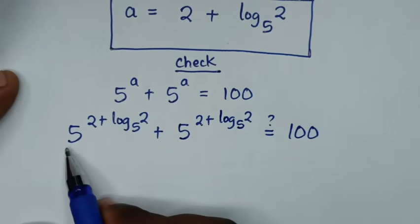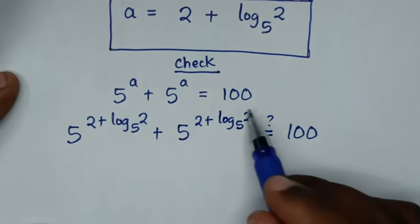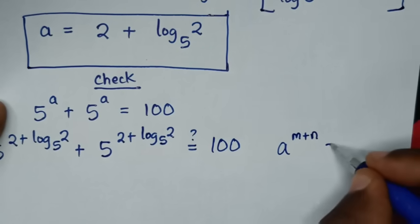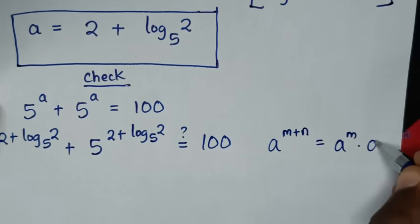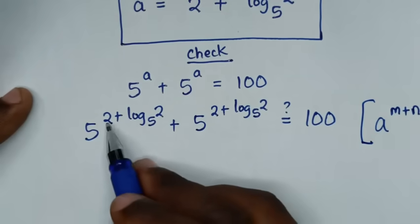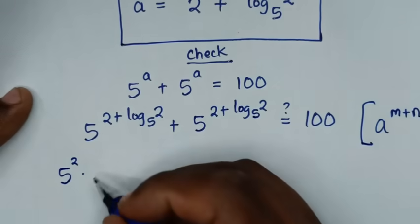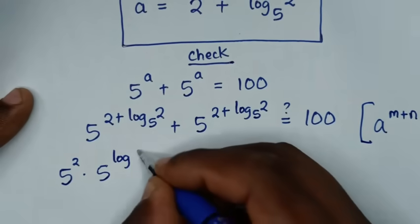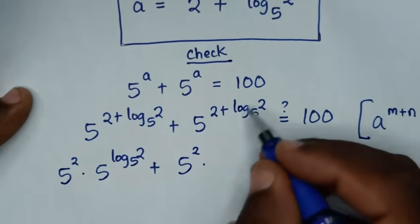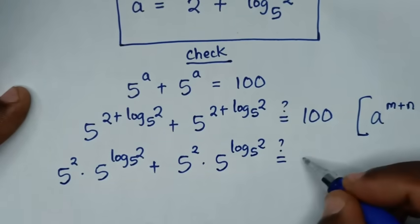Then from here, 5 power of 2 plus log base 5 of 2 — this part is in the form of a power of m plus n, which is equal to a power of m times a power of n. So 5 power of 2 plus log base 5 of 2 is the same as 5 power of 2 times 5 power of log base 5 of 2, is it equal to 100?